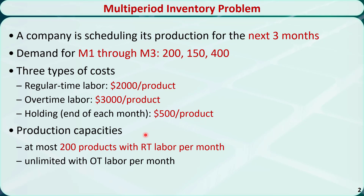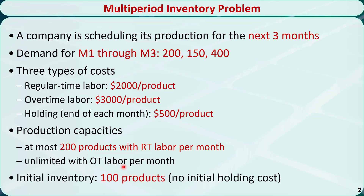At most 200 products can be made with regular-time labor per month. We can make an unlimited number of products using overtime labor. We have an initial inventory of 100 products, and we assume there is no initial holding cost. We want to formulate a linear programming problem to minimize the total cost over the next three months.